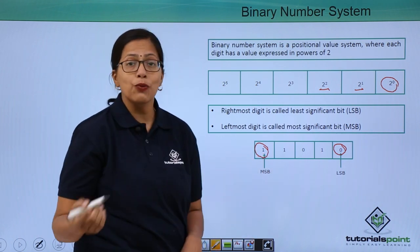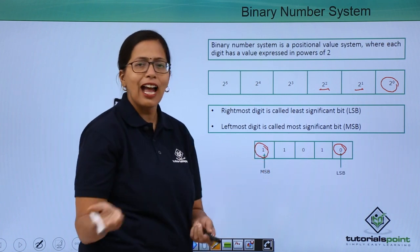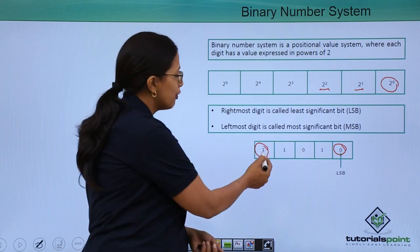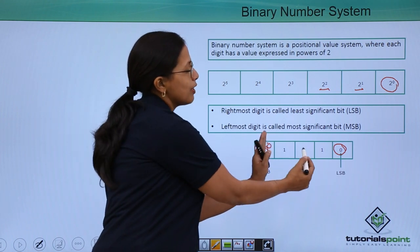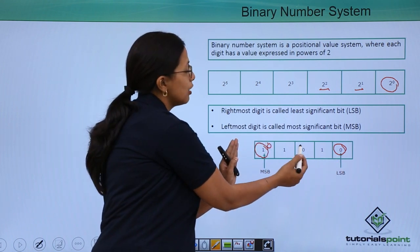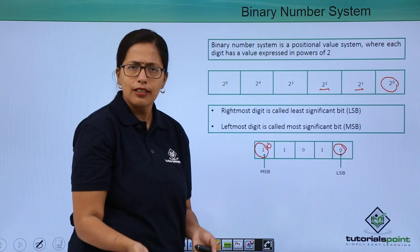Remember, this has to be always 1 because if it is 0, then actually it does not mean anything. If instead of 1, this number was 0, then actually the number 1, 0, 1, 0, 0, 1, 0 would be the same.